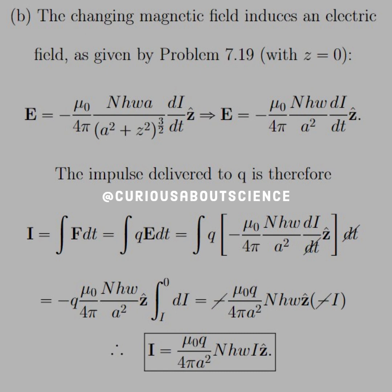Nothing too crazy. But now, if we're trying to solve for the impulse delivered to Q, therefore, we need the force, which is equal to QE. And then, of course, take the integral of that. So, if we take the integral of Q times this E field that we were given, we see that we have DI DT, which cancels out with a time element. And we're left with negative Q times mu naught over 4 pi NHW over A squared Z hat.